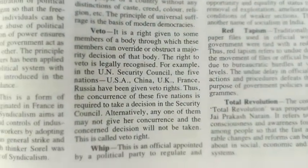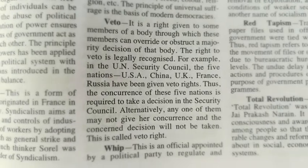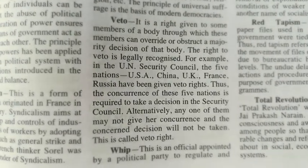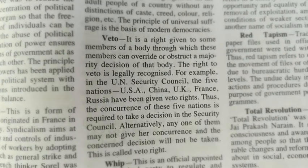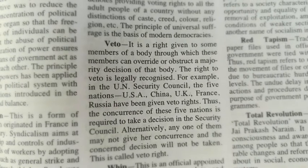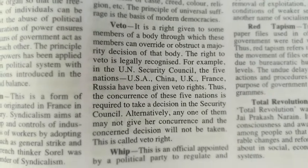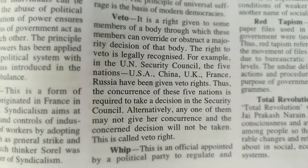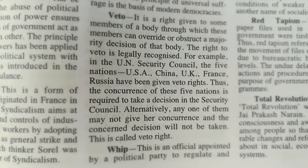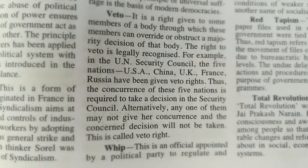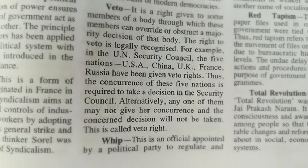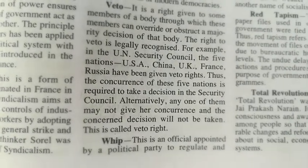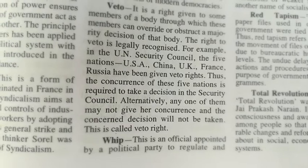Repeat again — Veto Power: it is a right given to some members of a body through which these members can override or obstruct a majority decision of that body. The right to veto is legally recognized. For example, in the UN Security Council, the five nations — USA, China, UK, France, Russia — have been given veto rights.